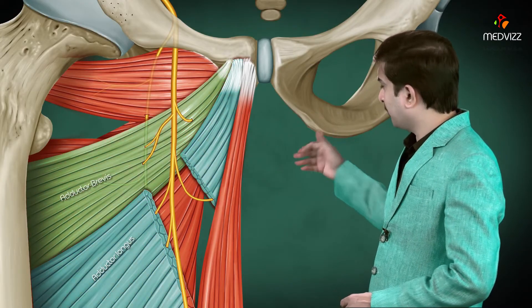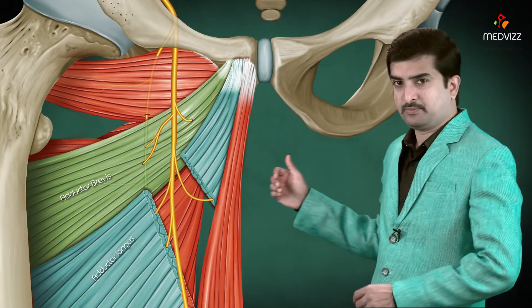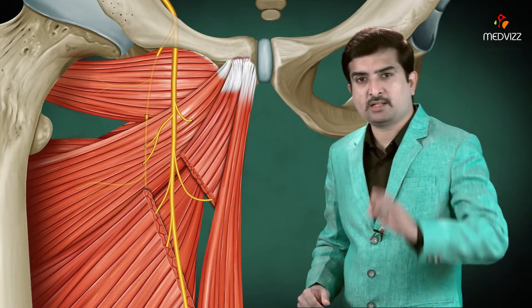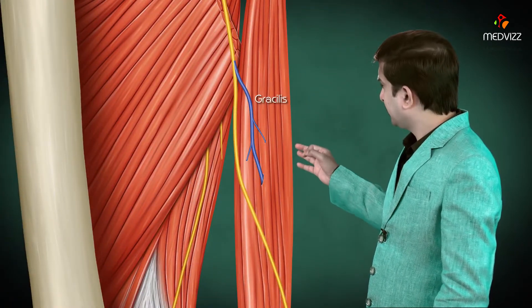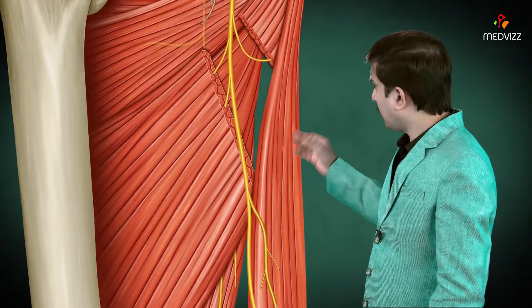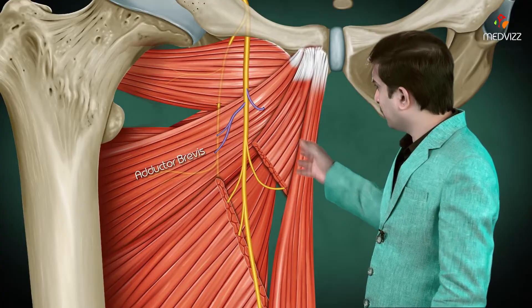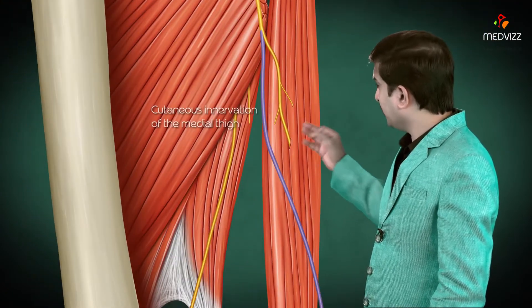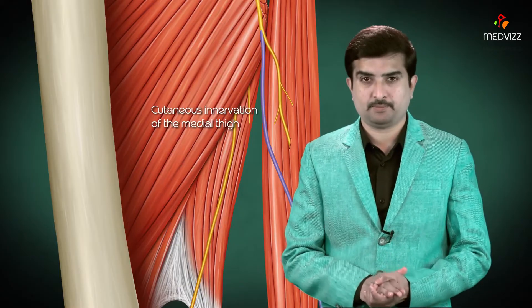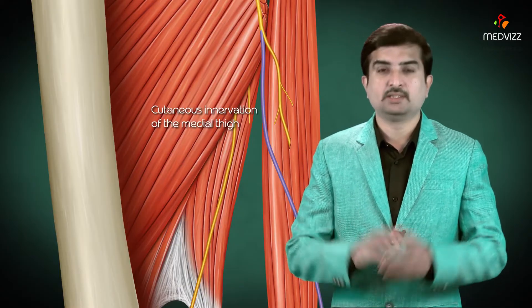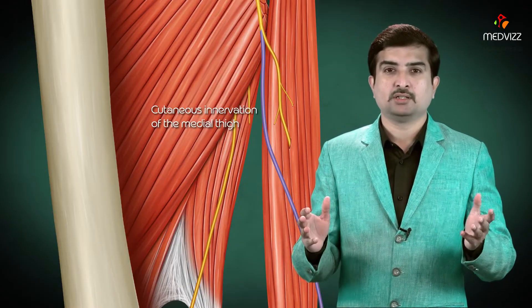The anterior branch innervates the adductor longus, gracilis, part of the adductor brevis, and provides cutaneous innervation to the medial aspect of the thigh. This covers the anatomy of the obturator nerve, and now we look at its clinical correlation — obturator nerve injury.